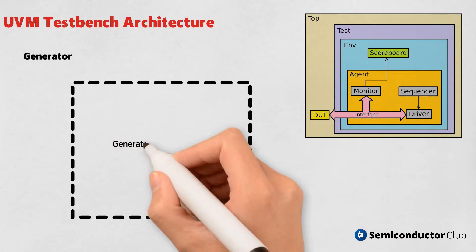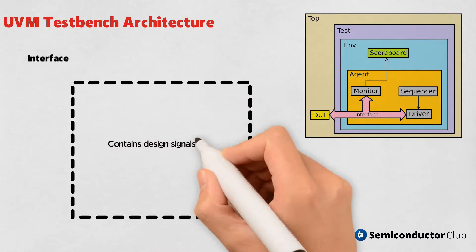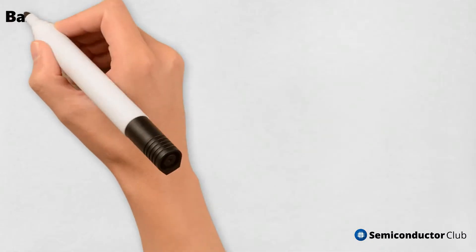Generator: generates different input stimulus to be driven to DUT. Interface: contains design signals that can be driven or monitored. Basic structure of UVM.